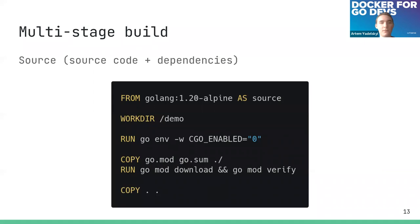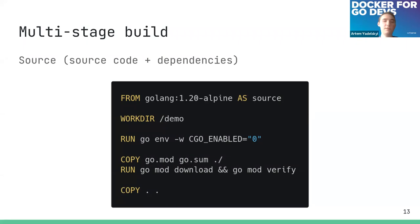The source stage uses the golang:alpine image, sets CGO_ENABLED=0, downloads go.mod/go.sum and dependencies, then copies the source code. This source image is reused across all other stages. This is useful because in most cases you want your source code to be immutable across build, test, and release — if you're testing one version of code and releasing another, that defeats the purpose. The read-only image layers give us this immutability.